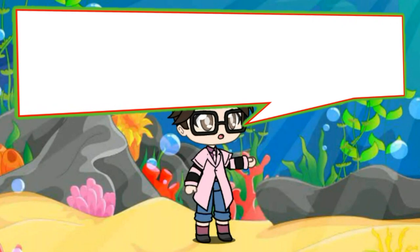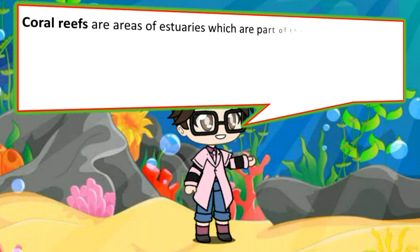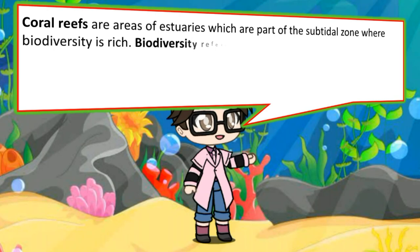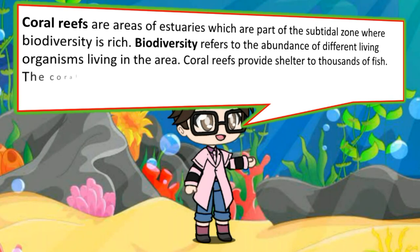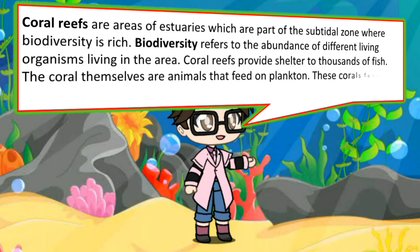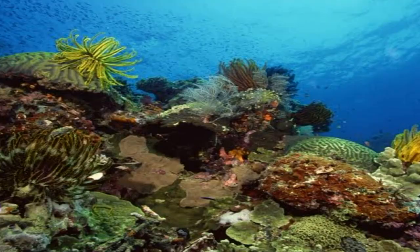Coral reefs are areas of estuaries which are part of a sub-tidal zone where biodiversity is rich. Biodiversity refers to the abundance of different living organisms in the area. Coral reefs provide shelter to thousands of fish. The corals themselves are animals that feed on plankton. These corals form reefs that protect the coast from strong waves and currents.